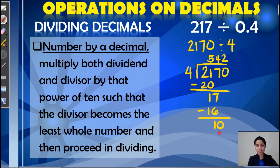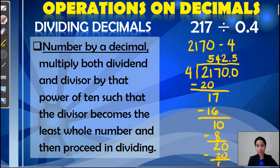Subtract, we have 2. Since we cannot divide anymore, we need to add another 0. So when we add, we put a decimal, and we also have to put a decimal on our quotient. Then bring down 0. 20 divided by 4 is 5. 5 times 4 is 20. When we subtract, we'll get 0. So in this example, the answer is 542 and 5 tenths.